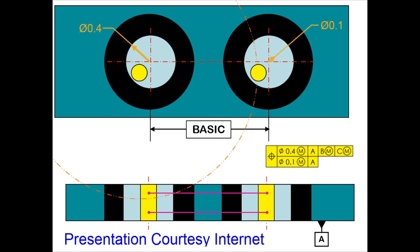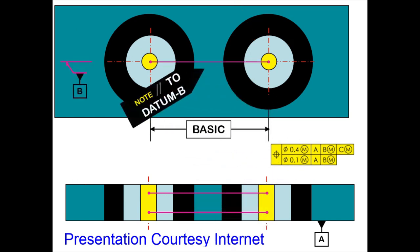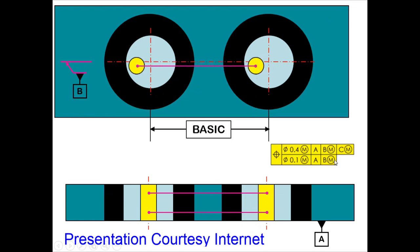This is another example wherein we have two datums. Perpendicularity with reference to datum A must be maintained. At the same time, both holes will have a center plane that must be always parallel to datum B. This is what is called composite tolerance.